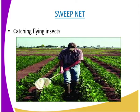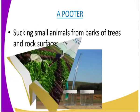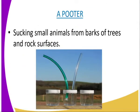Flying insects that the sweep net catches include bees, butterflies, grasshoppers, and so on. Our second apparatus used in the collection of specimen is the aspirator, also called a pooter. The aspirator is used for sucking up small animals, such as ants and termites, from rock surfaces and the barks of trees.